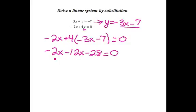The next step is to combine my like terms, negative 2x and a negative 12x is negative 14x minus 28 equals 0.